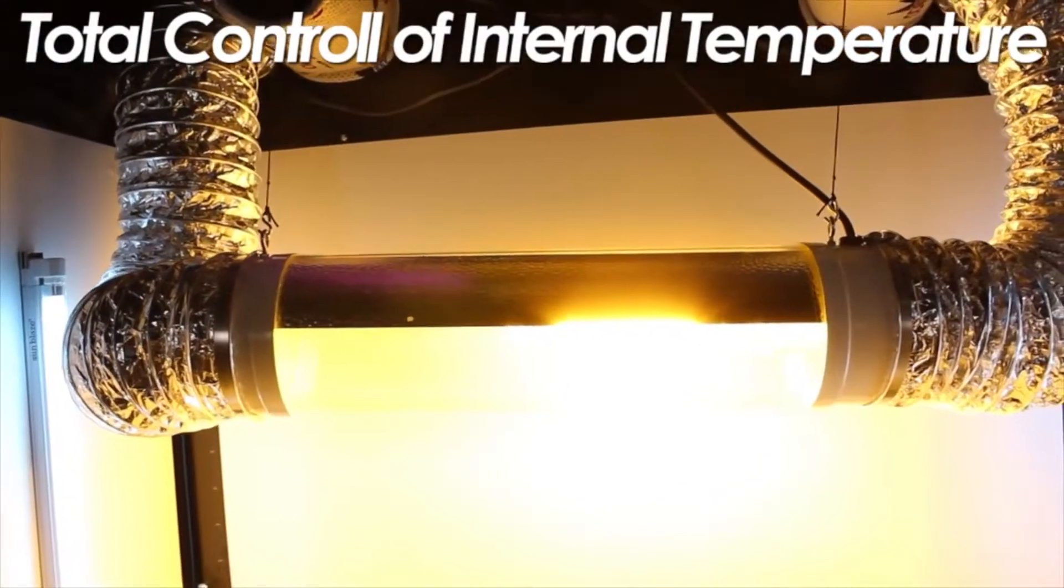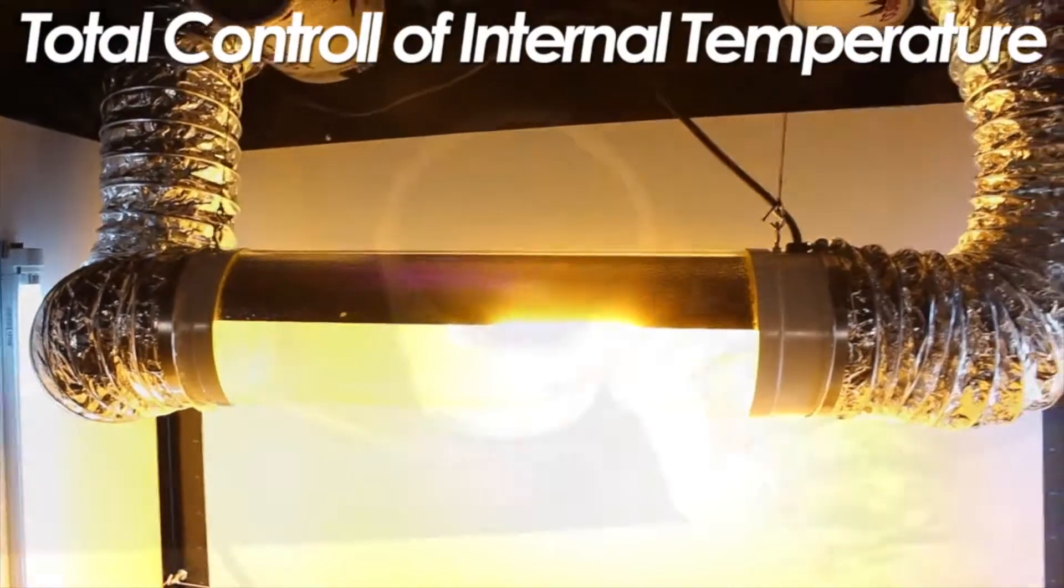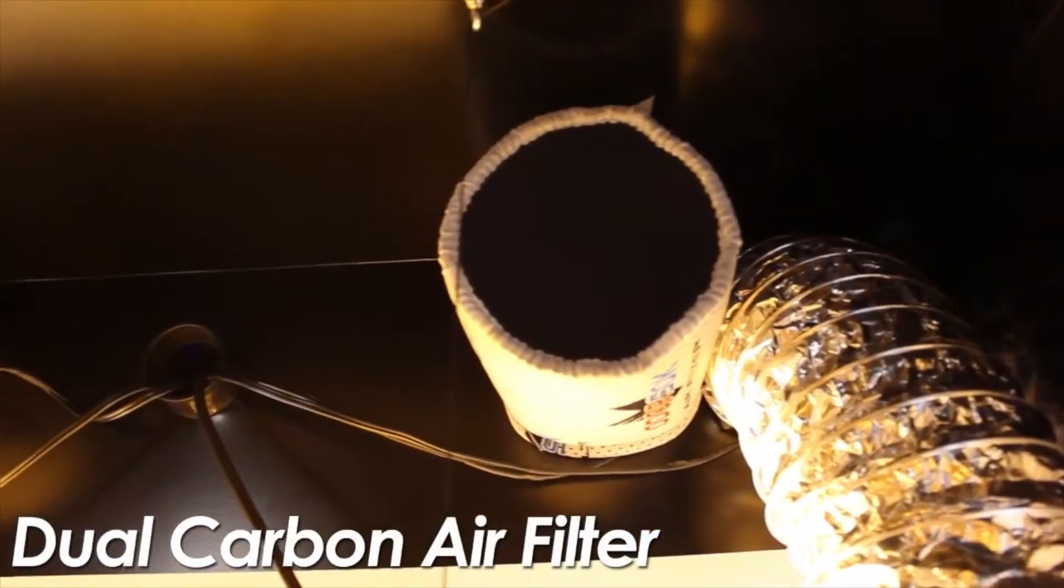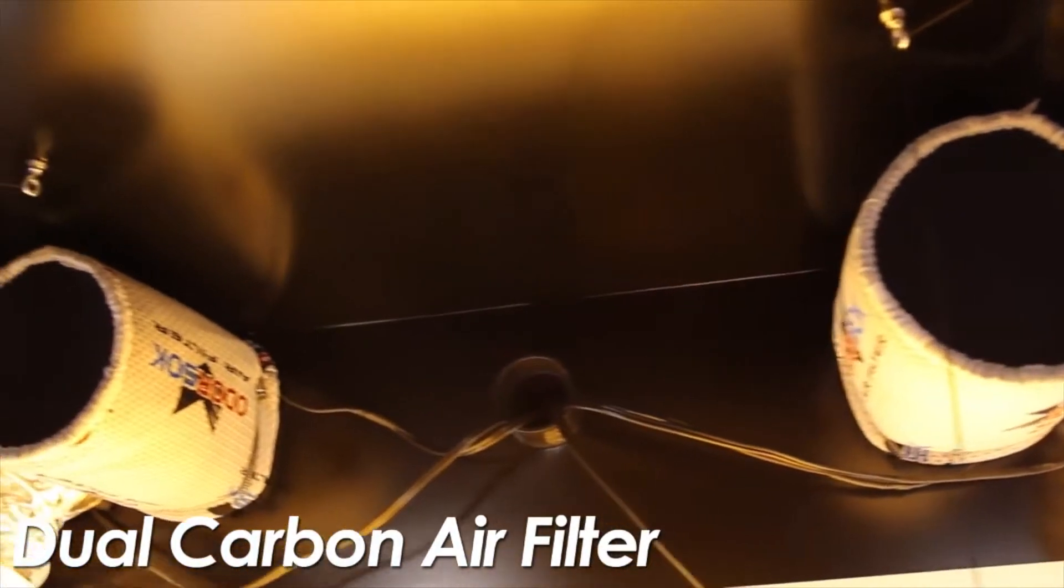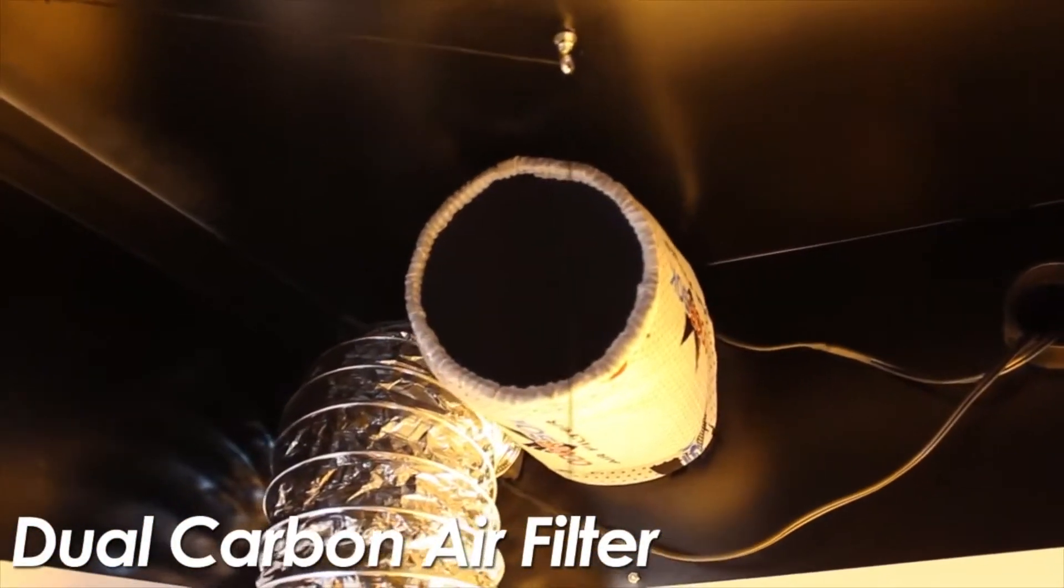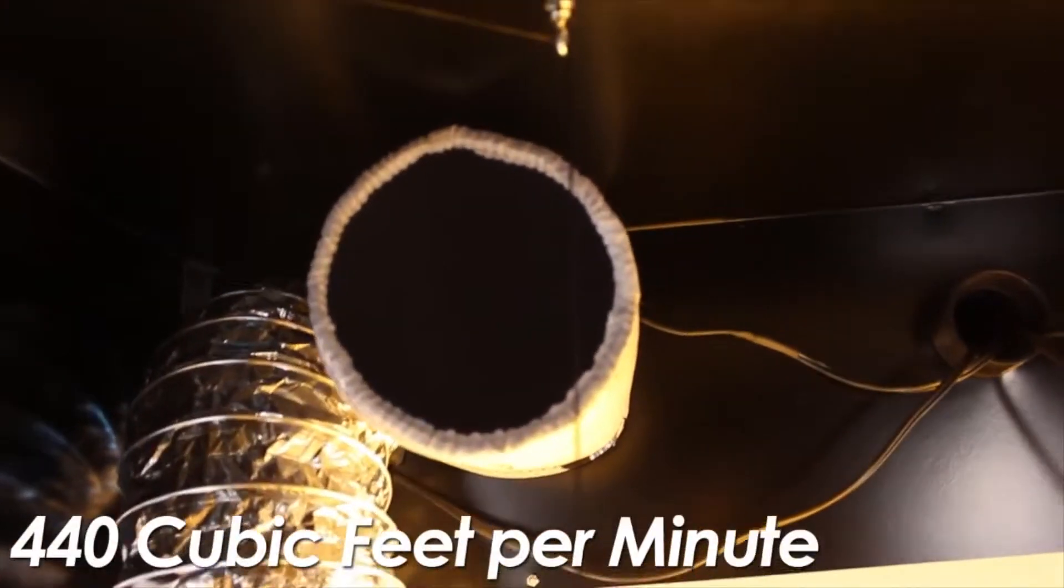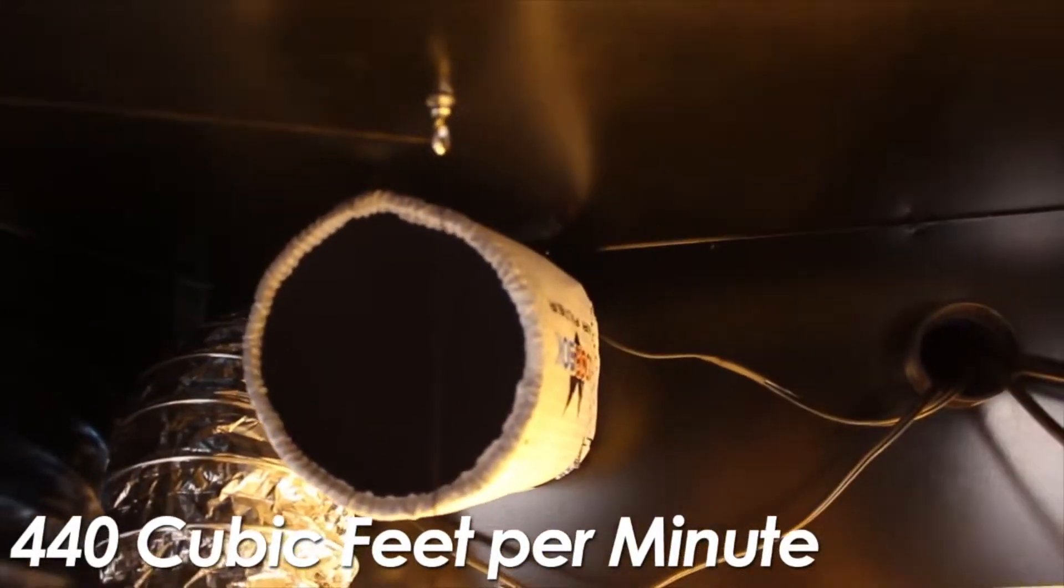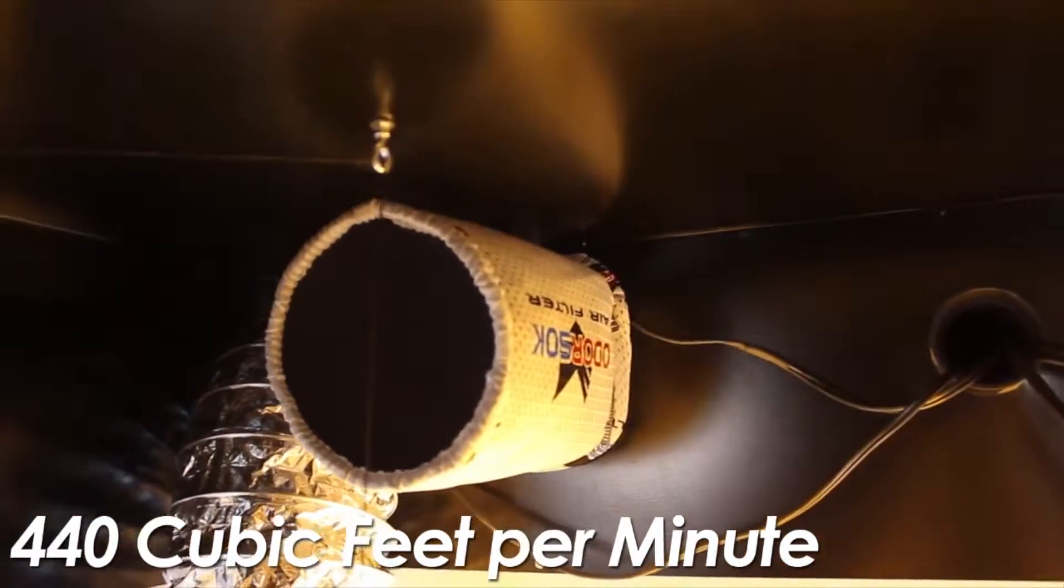These dual carbon filters take all the smell away and clean the air exiting the cabinet, so there's no smells and it runs very quiet. A total of 440 cubic feet per minute is going through this system.